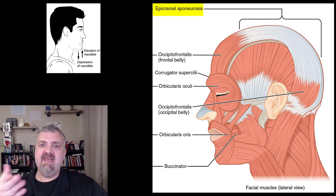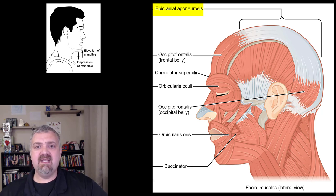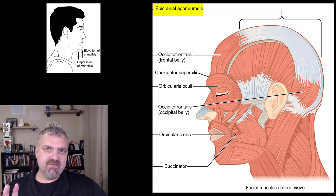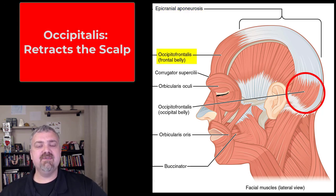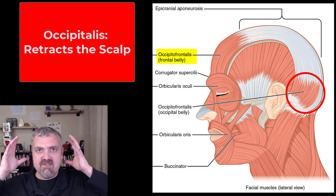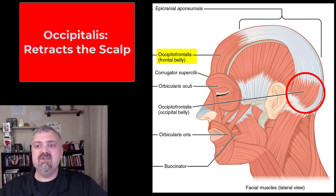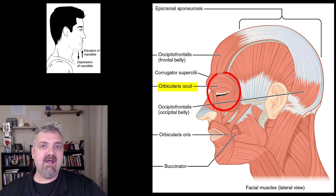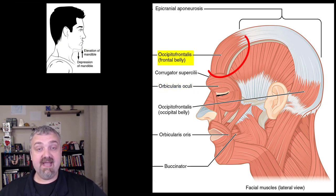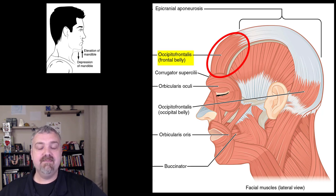In the lateral view, the epicranial aponeurosis at the top connects the frontal and occipital bellies of the occipitofrontalis muscle. I'll just call it the frontalis. Then we have the occipitalis muscle in the back, which retracts your scalp — it sits over the occipital bone. The orbicularis oculi is the circular muscle around the eye that closes the eye. The frontalis is over the frontal bone and raises your eyebrows.